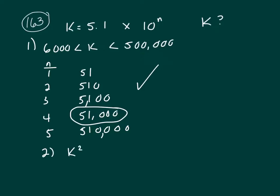In statement 2, you're given k squared equals 2.6001 times 10 to the n. Well, of course, that's going to work. Just take the square root of both sides, and you're going to have the value of k.